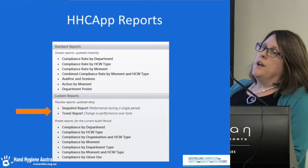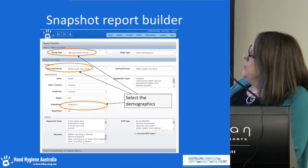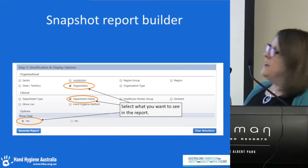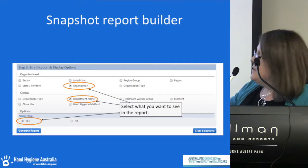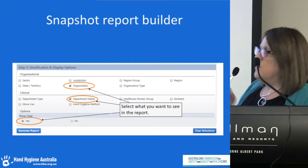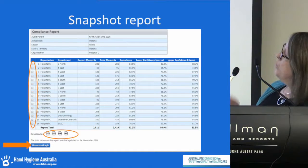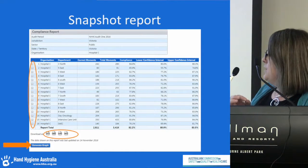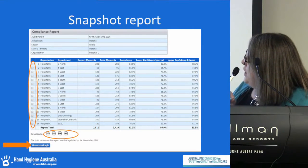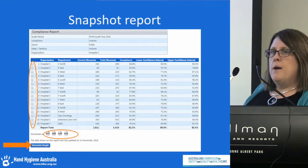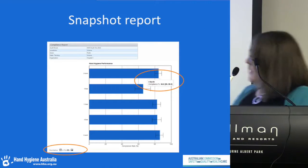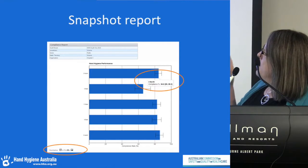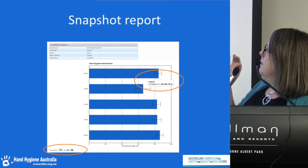Next, let's look at the snapshot and trend reports. To build the report, first select the demographics — for example, Audit 1 2016 and the hospital you want. Then select what you want to see: organisation, department name, and total number of moments. Once generated, you get a table with a compliance rate for every department. You can download that as a PDF or export it to Excel. To generate a graph, click 'generate a graph' and use the checkboxes on the left to select specific departments. Hovering over the confidence intervals shows a pop-up with detail.